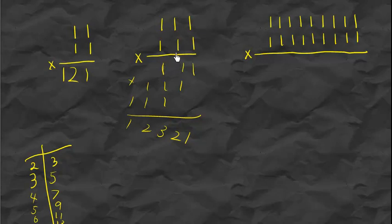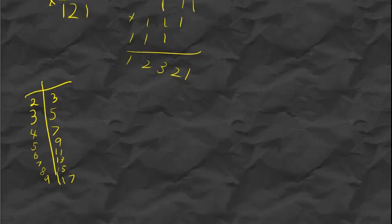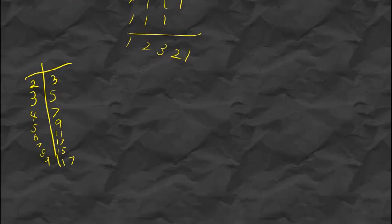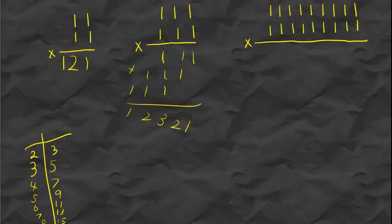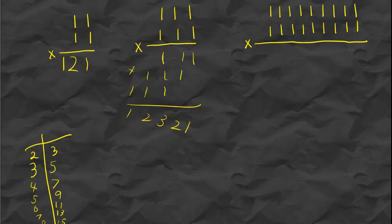If you figure out nine ones times nine ones by doing the full multiplication, it will take too long and too much time. The answer should be seventeen digits.